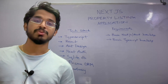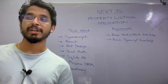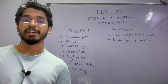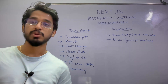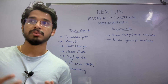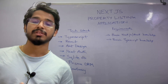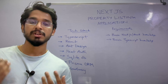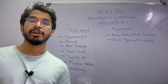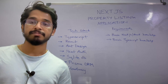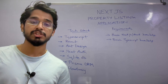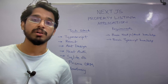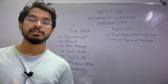Hey everyone, this is Tanuj. In this video we are going to get started with another course where we will be building a property listing website using Next.js. This is an application where you can search for properties, contact the owner, view all the images — just like websites such as 99acres or NoBroker.com. We are building a clone of it. You can also post properties, talk with clients, and others can message you as well. I'll be showing you a demo after explaining the tech stack and requirements.